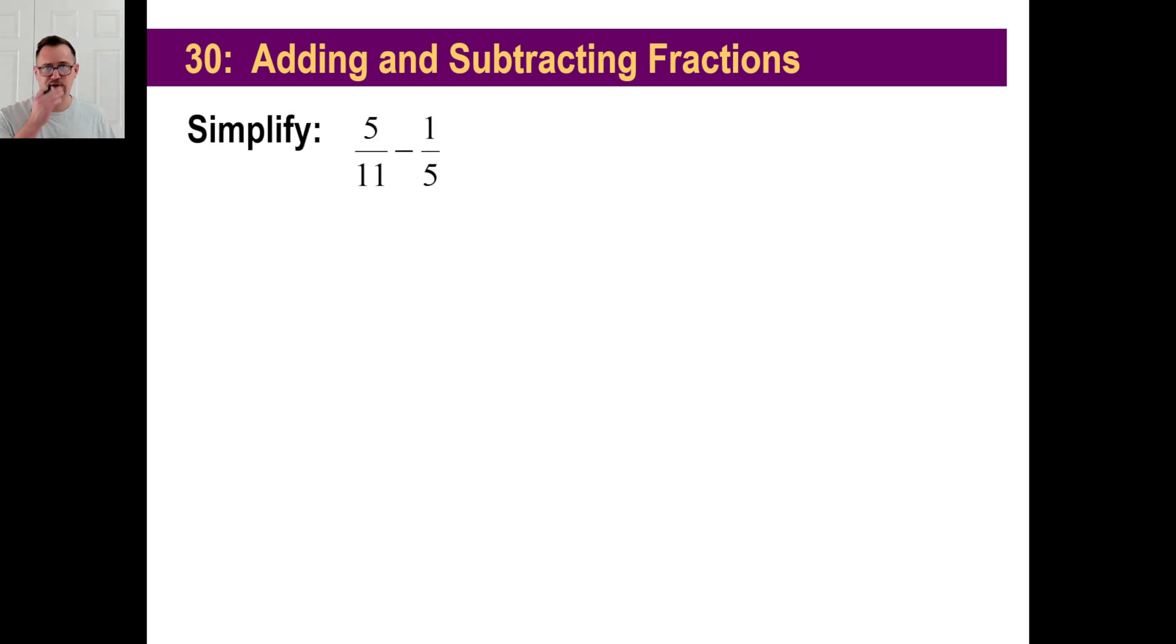Okay, so let's simplify this. If you want to, pause it and see what you get. Okay, we're going to have to subtract this using the same denominator. Well, 11 and 5 multiply to give you 55. So 11 times 5, so you have 5 times 5 is this one, 5 times 11, and 1 times 11. So 25 minus 11 gives you 14 over 55, and that's the answer for that one. Okay, let's try another one.